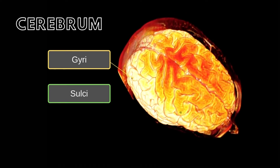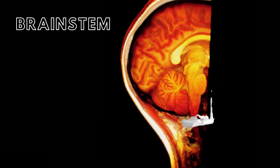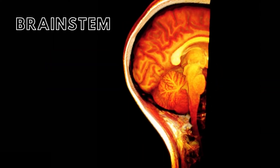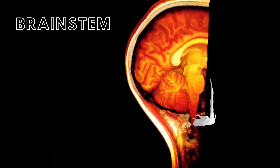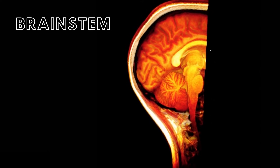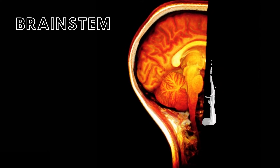The second division of the brain is the brain stem, which is composed of four structures and is responsible for regulating most of the body's automatic functions that are essential for life.